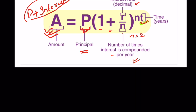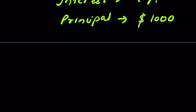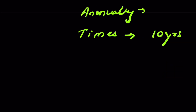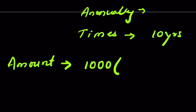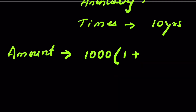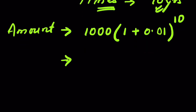So if your interest rate is 1%, principal is $1,000, compounded annually, invested for 10 years — how do we calculate the amount at the end of 10 years? The amount will be: A = 1000 × (1 + 0.01/1)^(1×10), which simplifies to 1000 × (1.01)^10.